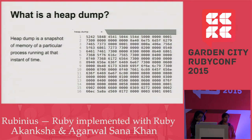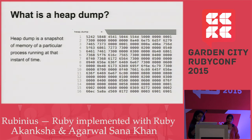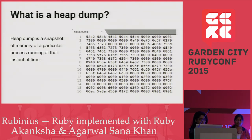A heap dump is a memory snapshot of a particular process running at that instant of time. When the virtual machine is running, the heap dump consists of all the objects that are in memory at the instant the heap dump was triggered. It is in binary format and is generally a few hundred MBs. The heap dump tool reads and interprets the binary heap dump to produce useful information.